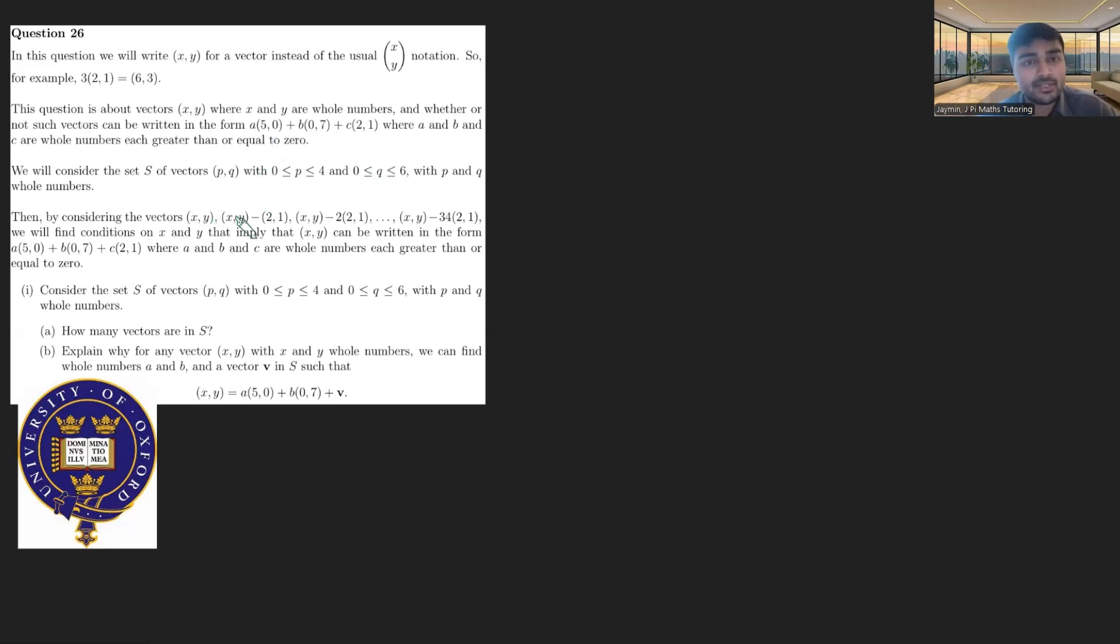Where a, b and c are whole numbers greater than or equal to zero. We will consider the set S of vectors pq with p between zero and four and q between zero and six with p and q whole numbers. Then by considering the vectors xy, xy minus (2,1), xy minus 2 times (2,1) and so on up to xy minus 34 times (2,1), we will find conditions on x and y that imply xy can be written in this form, where a, b and c are whole numbers greater than or equal to zero.